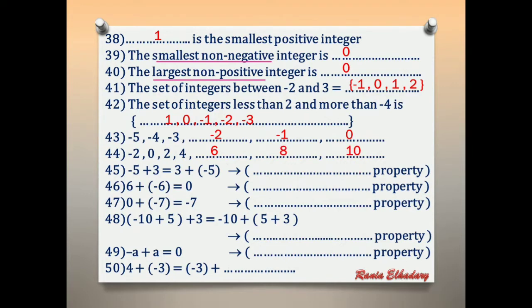Number 45: negative 5 plus 3 equals 3 plus negative 5. We change the places of two numbers. This property is commutative.